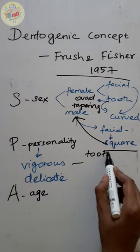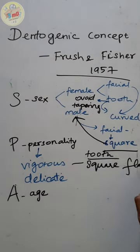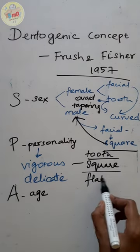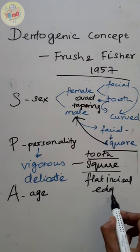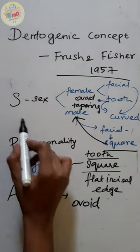In personality, for a vigorous personality, we need to choose more square and flat incisal edged teeth. For delicate personalities, we need to choose ovoid teeth.